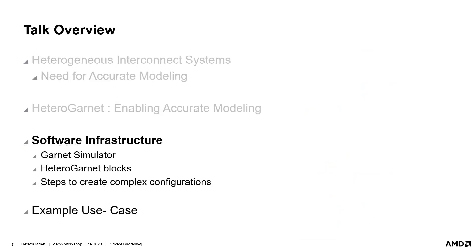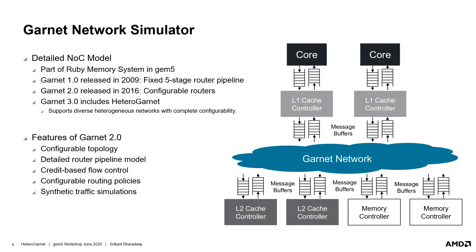Garnet is a detailed network-on-chip model introduced in 2009. It is part of the Ruby memory system of Gem5. Garnet 2.0 was added in 2016, which allowed multi-stage pipelining within the routers. Heterogarnet is now being released as Garnet 3.0 and will support complete heterogeneity. Garnet includes complete flexibility in terms of interconnect modeling, with support for credit-based flow control and several routing and deadlock prevention mechanisms. It also supports synthetic traffic. Garnet is integrated into Ruby and the rest of Gem5 through message buffers connected to cache controllers and memory controllers, enabling full system simulations and easy integration into GPU simulations.